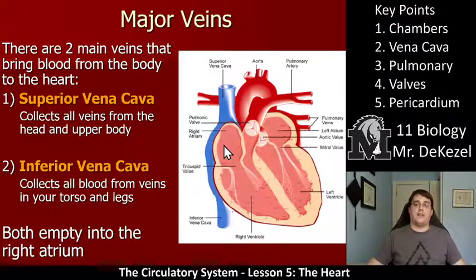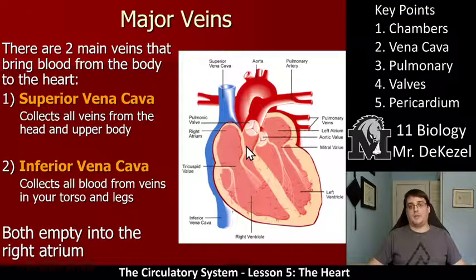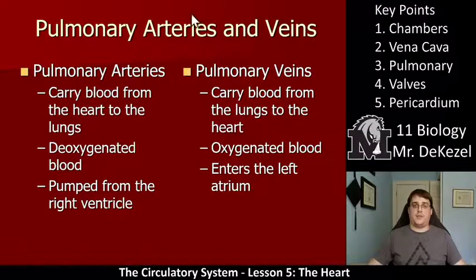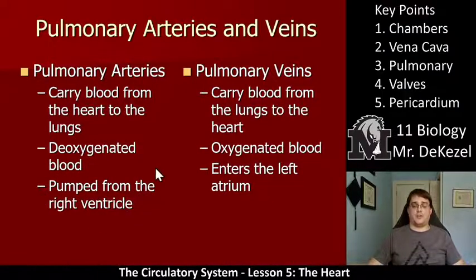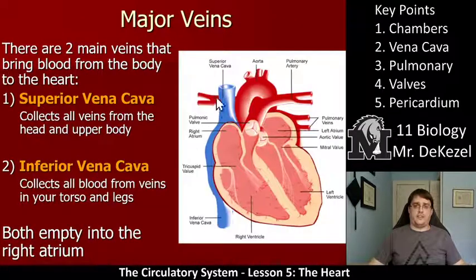After blood is in the right atrium, it goes down into the right ventricle. After it is in the right ventricle, this muscular portion pumps it up through the pulmonary arteries. The pulmonary arteries are going away from the heart. Pulmonary arteries carry blood from the heart to the lungs — pulmonary essentially means lungs. This blood is deoxygenated and is pumped from the right ventricle. It goes to the lungs to get oxygen. So, deoxygenated blood comes through the vena cava into the right atrium, the right atrium pumps it into the right ventricle, and it is then pumped through the pulmonary arteries to the lungs where it gets oxygenated.